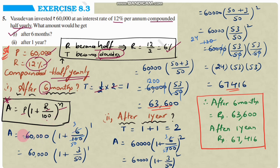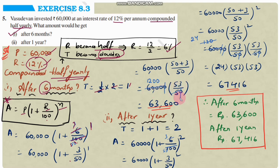Using formula A = P × (1 + R/100) to the power of N: A = 60,000 × (1 + 6/100) to the power of 1. Simplifying 6/100 = 3/50, so A = 60,000 × (53/50). After cancellation: 1,200 × 53 = rupees 63,600. Therefore after 6 months, the amount is rupees 63,600.